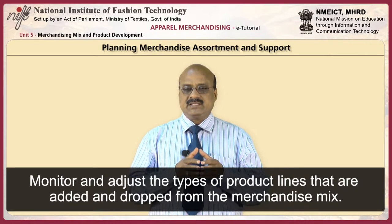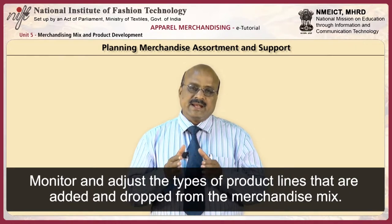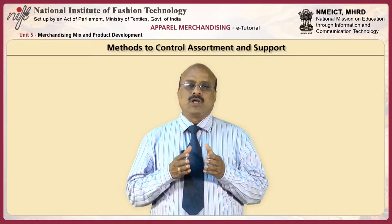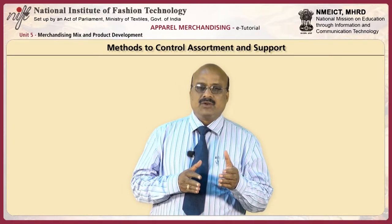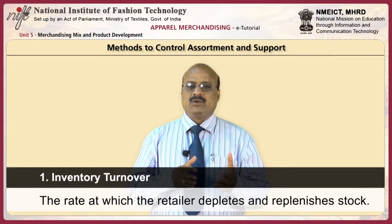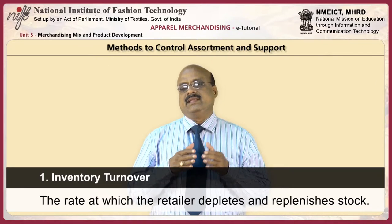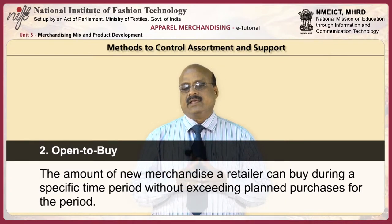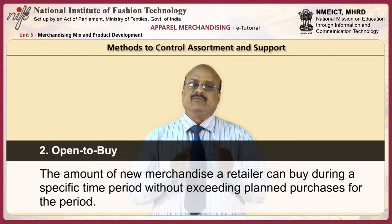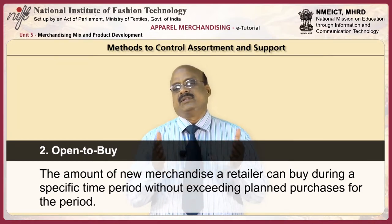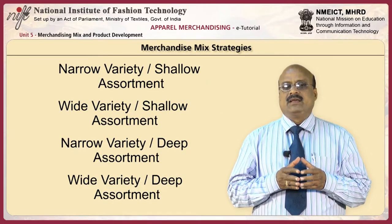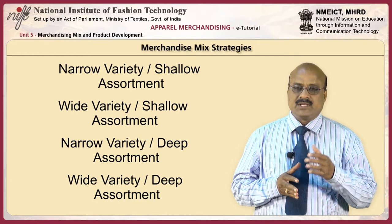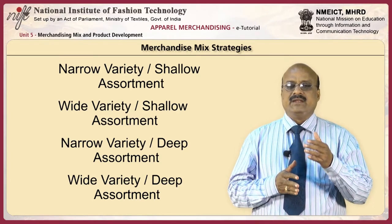This involves monitoring and adjusting the types of product lines that are added and dropped from the merchandise mix. Two widely used methods to control assortment and support are inventory turnover and open to buy. Inventory turnover is the rate at which the retailer depletes and replenishes the stock. Open to buy is the amount of new merchandise a retailer can buy during a specific time period without exceeding the planned purchases for the period. Direct optimal variety and assortment strategies include narrow and shallow, wide and shallow, narrow and deep, and wide and deep assortments.